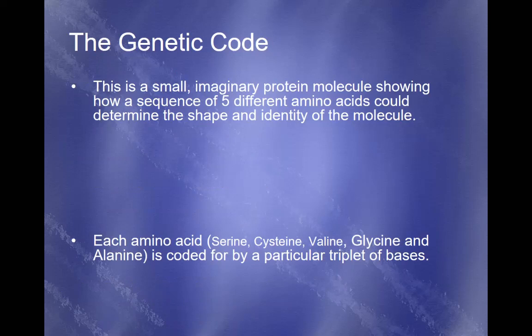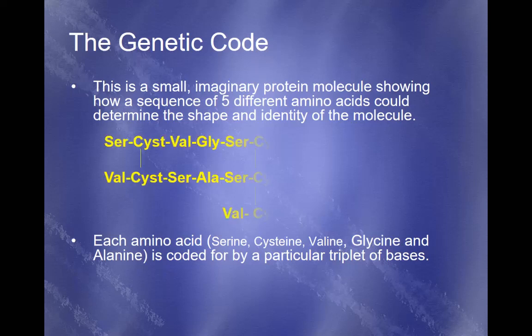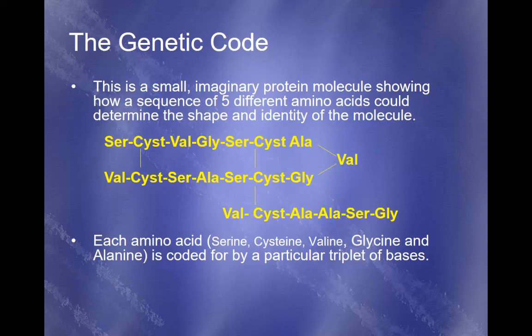I'm going to build an imaginary protein — it won't be a full protein, it'll be smaller than most, and I'm going to limit myself to only five different amino acids. You can see we've got serine, cysteine, valine, glycine, serine, cysteine, alanine, and valine. The cysteines in particular have a bridge going between them — this is a disulfide bond. It's got sulfur in it to hold it together. If you remember the elements found in proteins: CHOMPs — carbon, hydrogen, oxygen, nitrogen, phosphorus, and sulfur — proteins are the only macromolecule that really has that sulfur in these bonds.